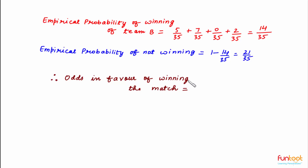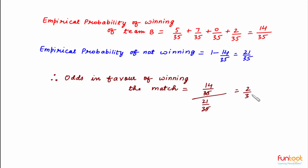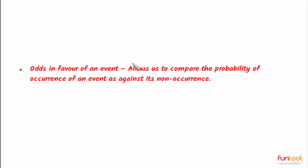Therefore, odds in favor of winning the match equal the empirical probability of winning (14 by 35) divided by the empirical probability of not winning (21 by 35), which calculates to 2 by 3, equal to 0.67. In summary, odds in favor of an event allow us to compare the probability of occurrence of an event against its non-occurrence.